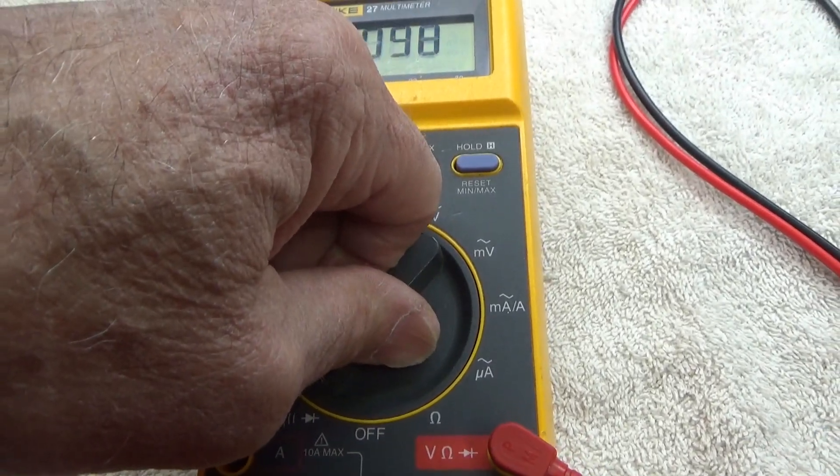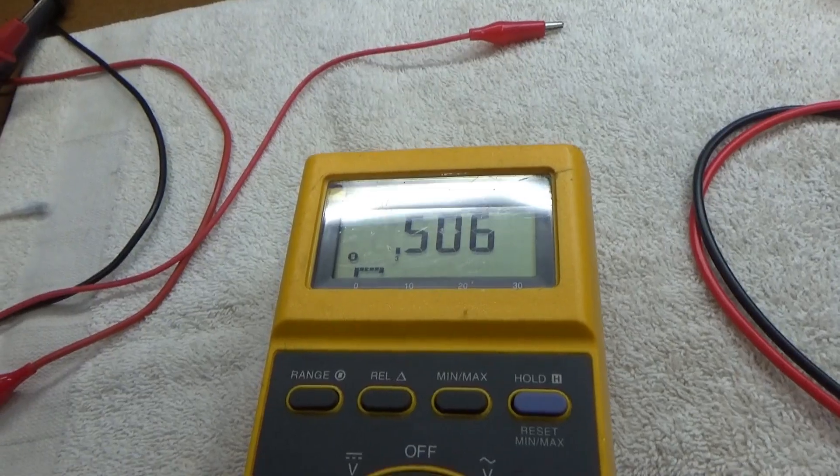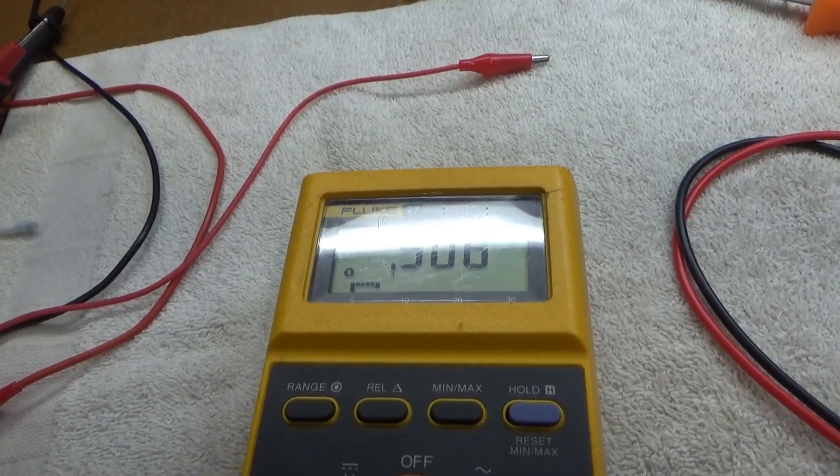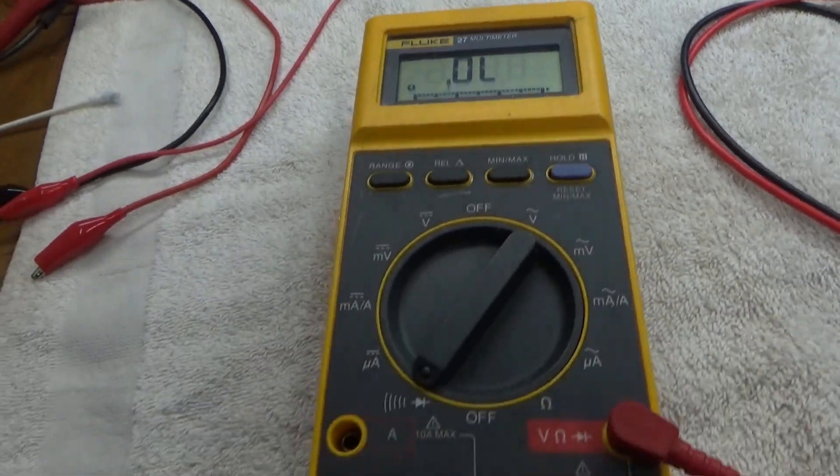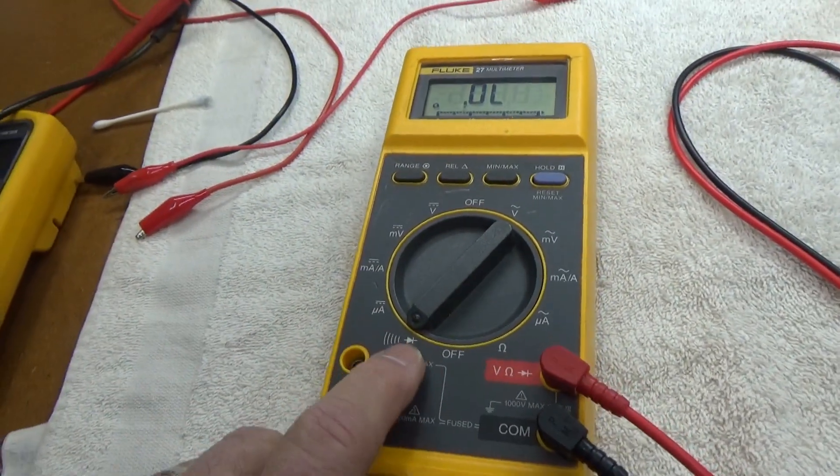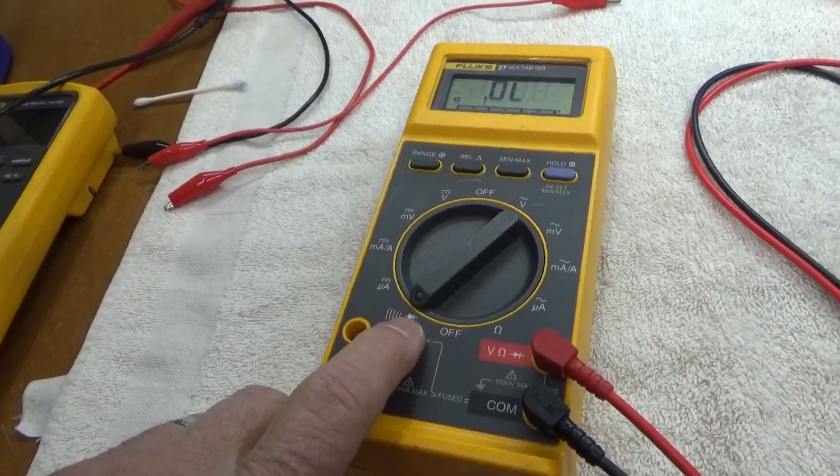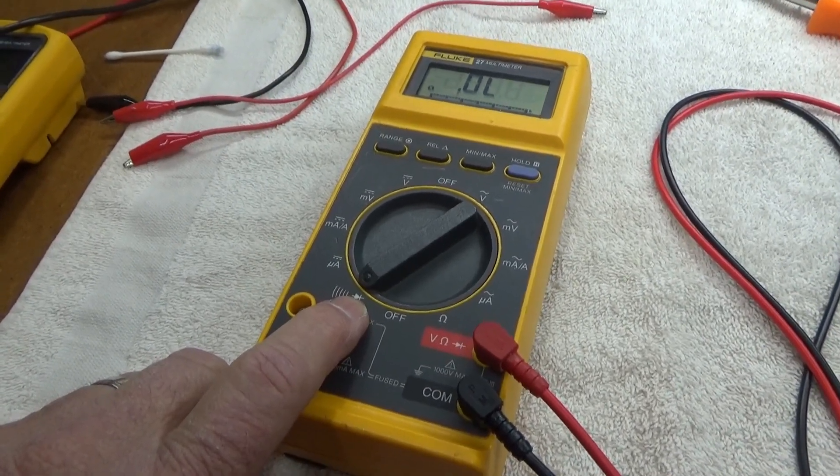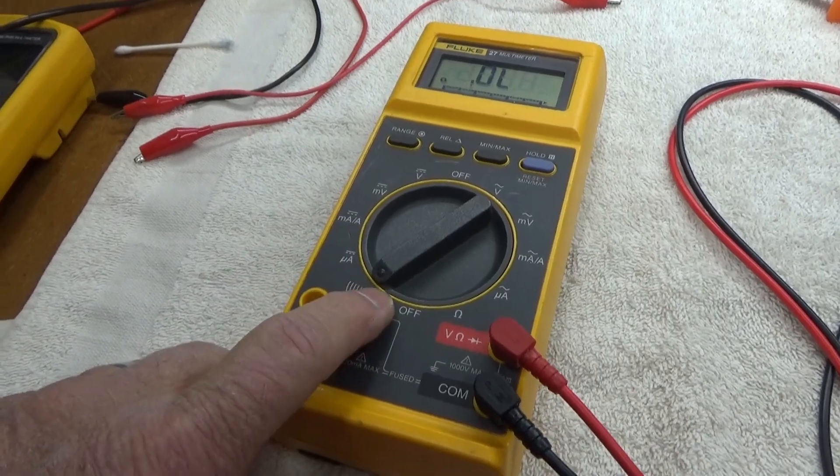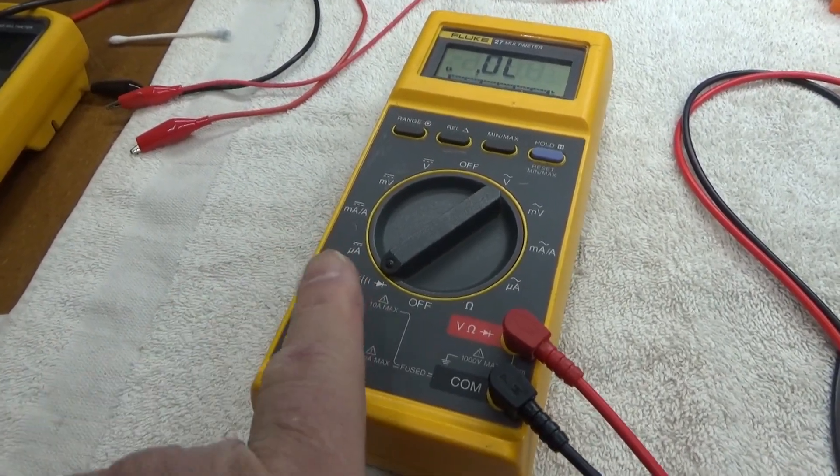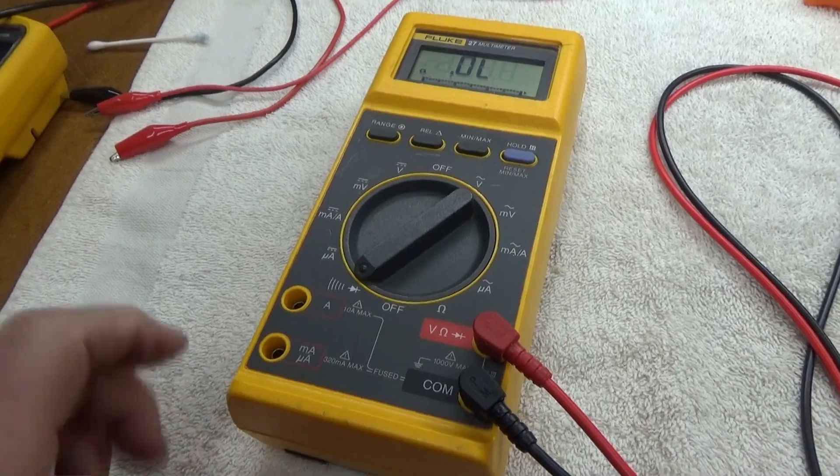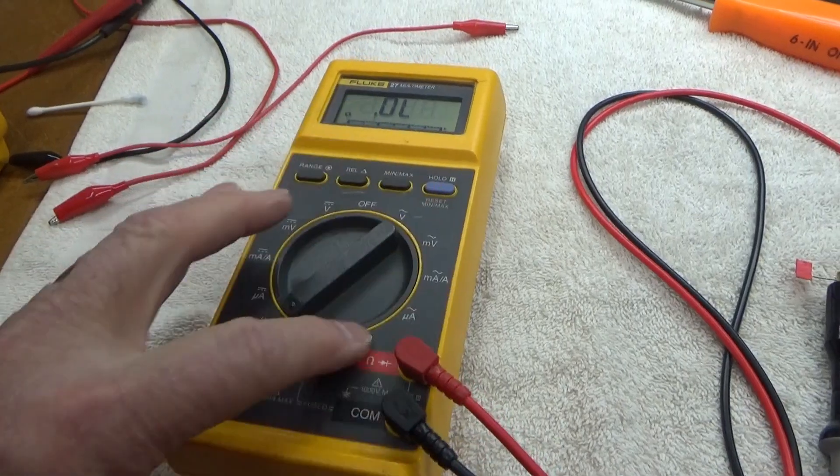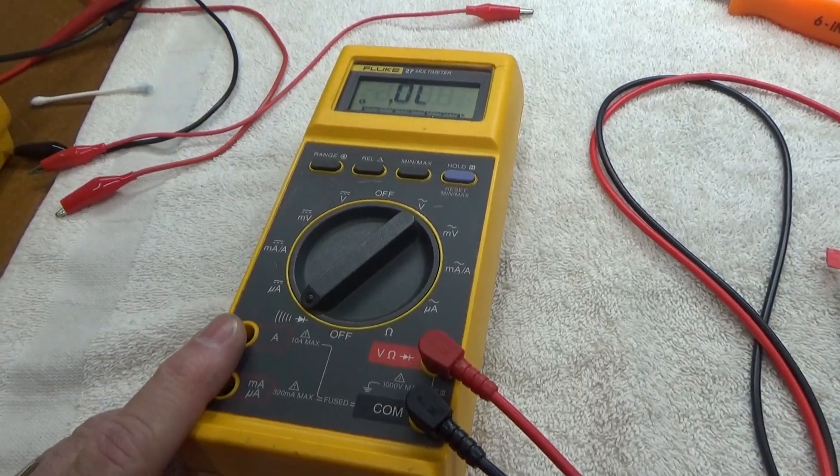Now it seems to be working. So it's something in the range switch itself, and that wafer switch is, I'm sure, not obtainable anymore. So if I really want to use this, I'll know just to nudge it a little bit this way to get it to work. The circuit's good.